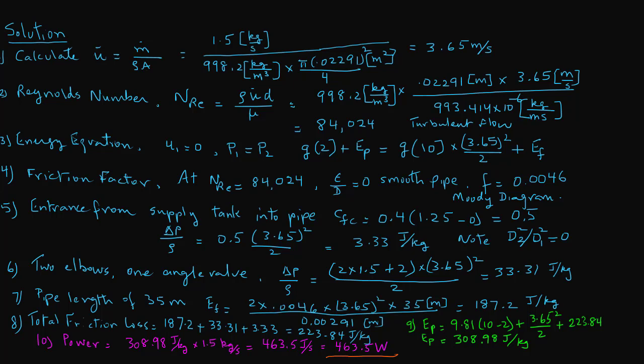As an overview: we first calculated the velocity and then the Reynolds number. From the Reynolds number we determined the friction factor. We then found all frictional energy terms — for water entering from the tank into the pipe, for the fittings (two elbows and one angle valve using table coefficients), and for the total pipe length. Adding all friction losses, we returned to the energy equation to find ep — the total energy to move water from one tank to the other — and converted that into power using the mass flow rate.